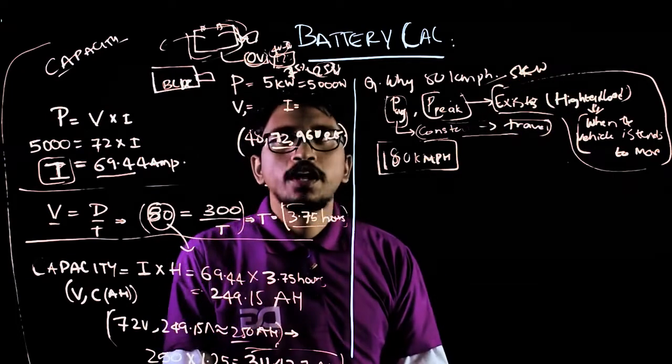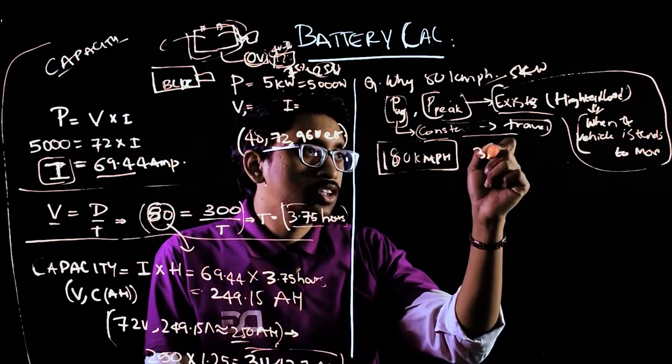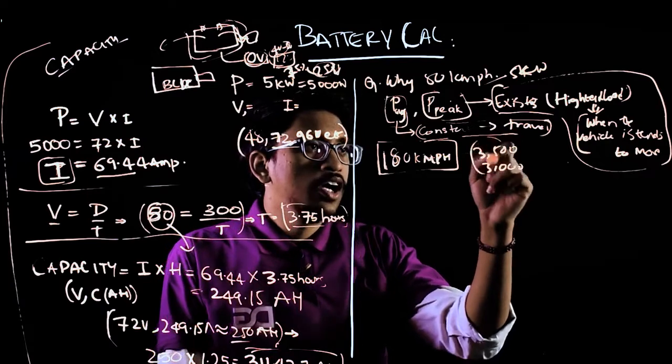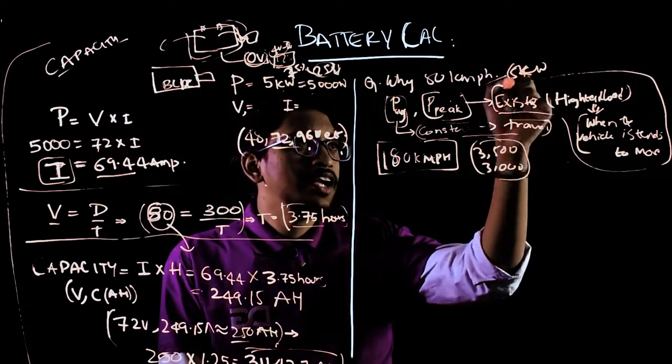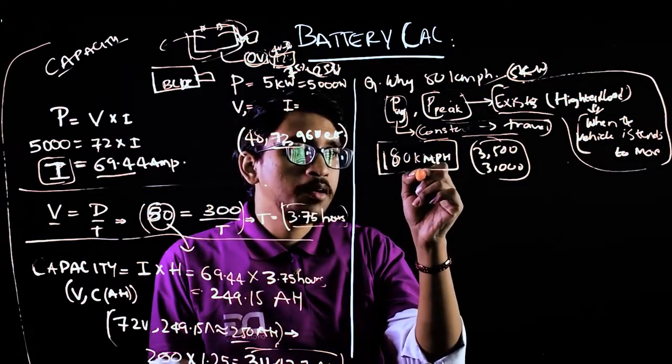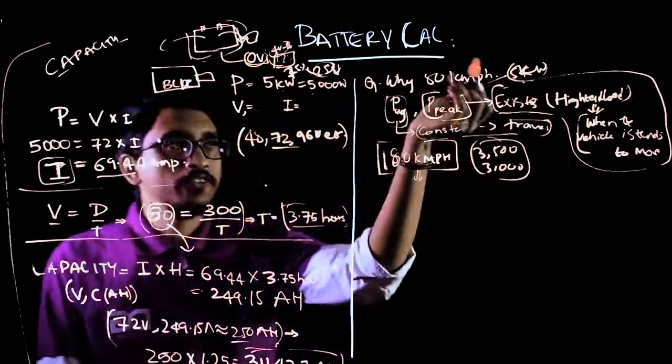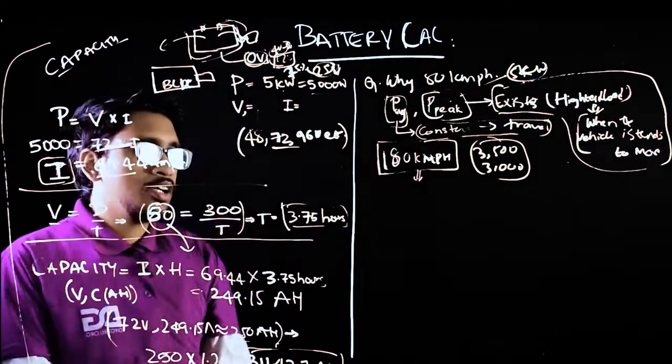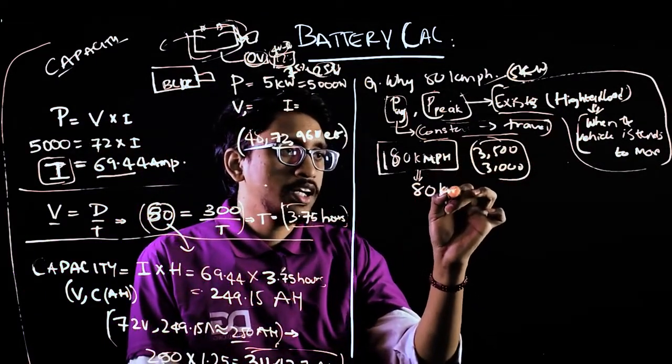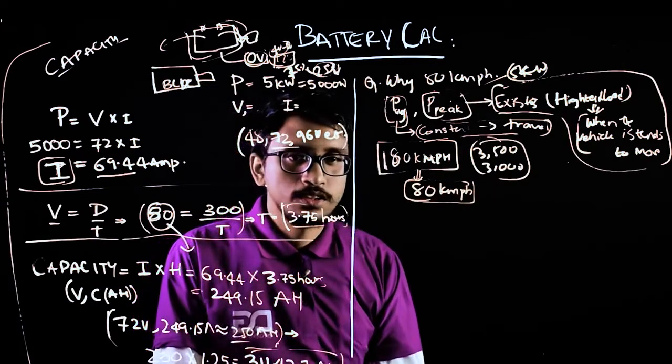On average, it will take around 3500 or 3000 watts. When I calculate with my peak power, I don't need to use maximum kilometers per hour. This 5 kilowatt acts as peak power, so I just need to use average kilometers per hour. It's enough to make the calculations.